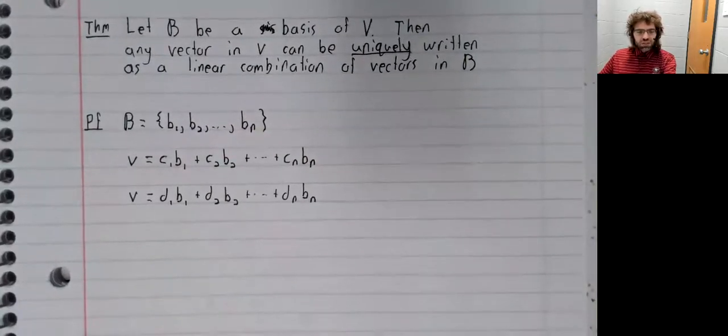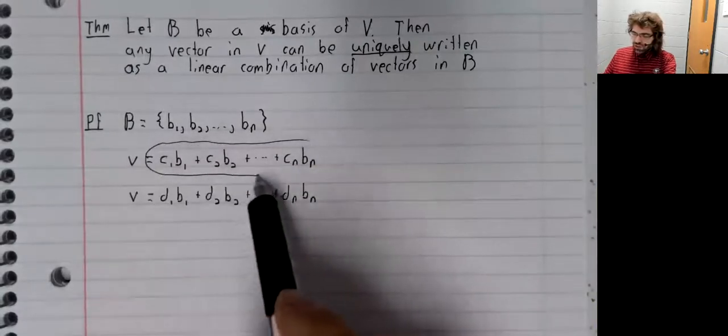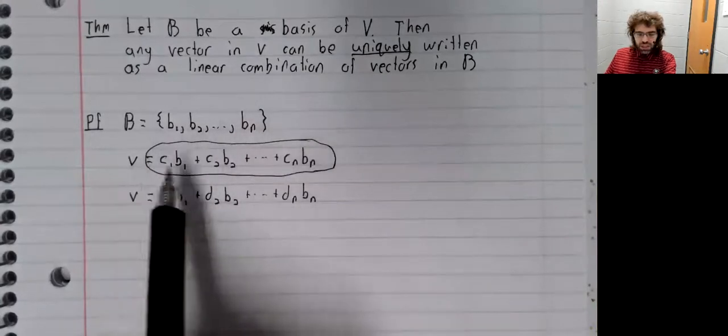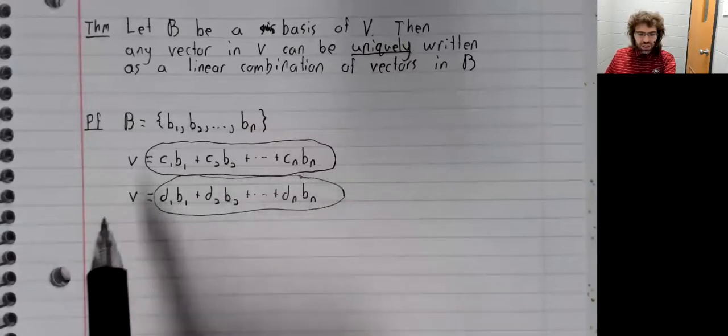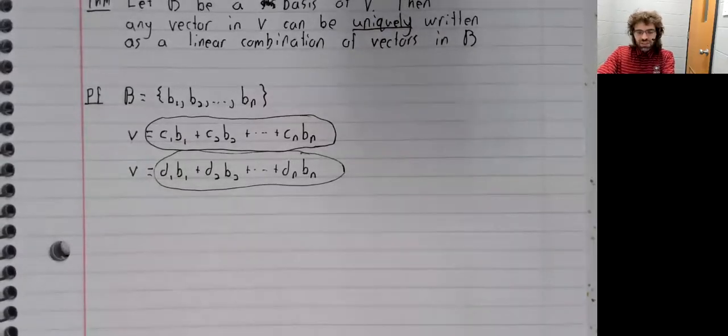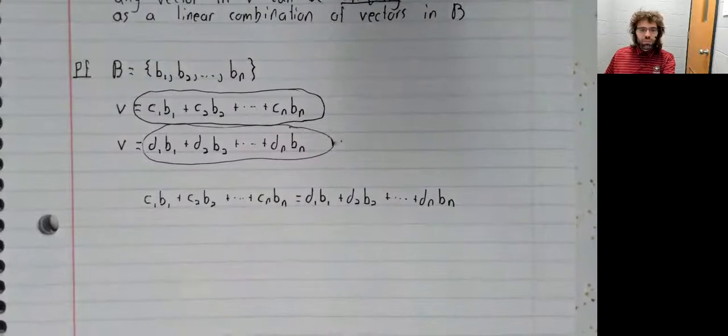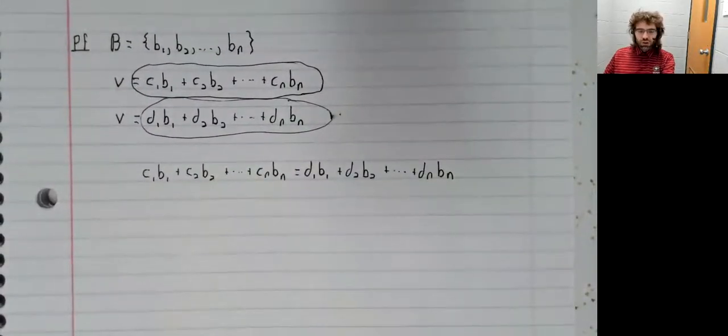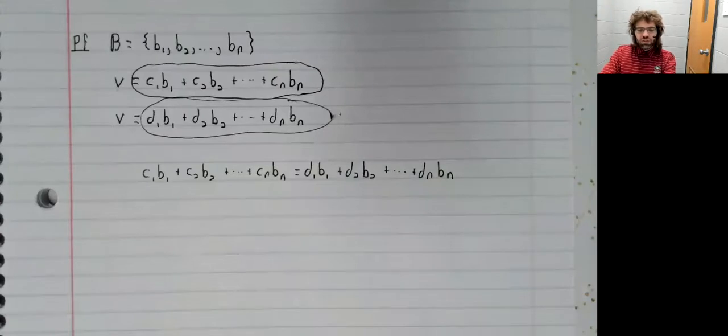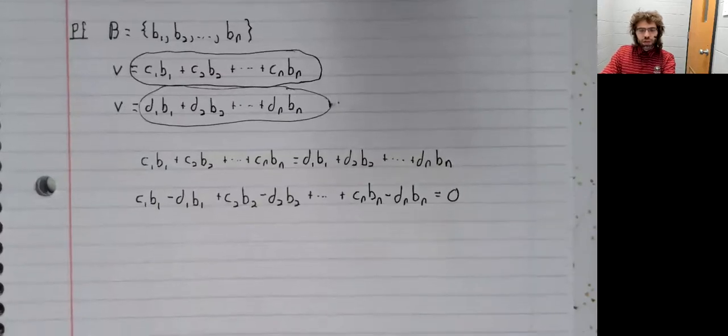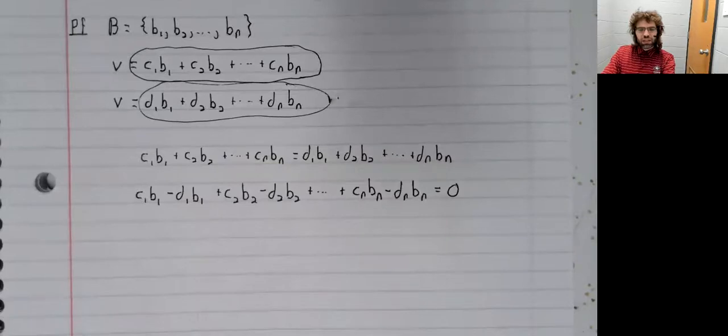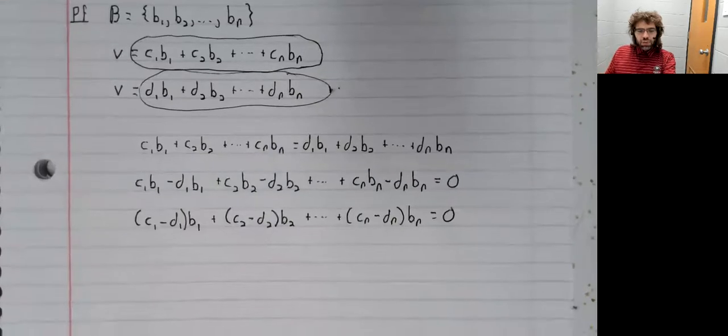Let's prove that's true. If this linear combination equals V, and this linear combination equals V, then certainly, since they equal the same thing, these linear combinations equal each other. Now we'll perform some elementary algebra. We'll move everything to the left and pull out our common B vectors.